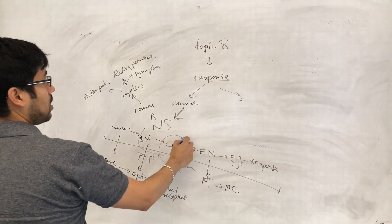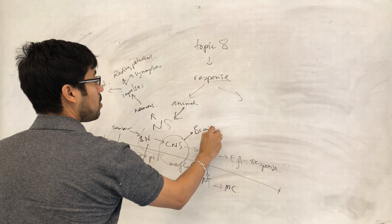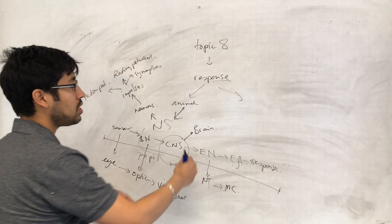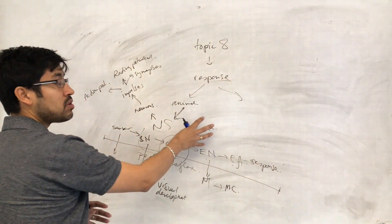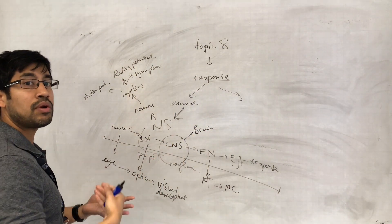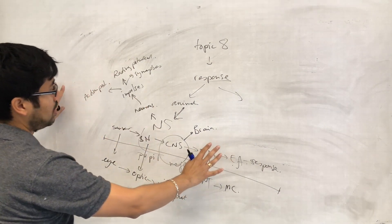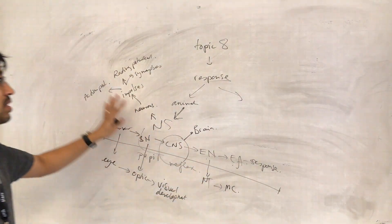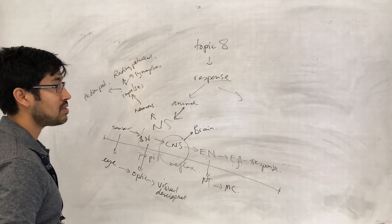We also looked at an offshoot of the central nervous system — the brain — its regions, its overall structure, and the function of the different parts. We also looked at how brain function can be affected when the synapses in the brain don't work properly because of abnormal neurotransmitter levels. All these things are related to each other through this idea of the nervous system.